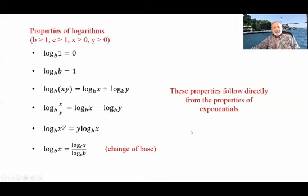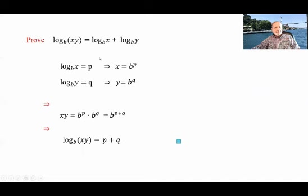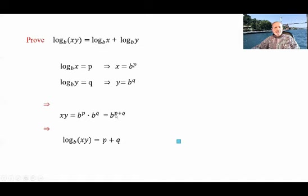These properties all follow directly from the properties of exponentials. Let's prove a couple. To prove log b of xy equals log b of x plus log b of y: let P equal log b of x, meaning x equals b to the power P. Let Q equal log b of y, meaning y equals b to the power Q — straightforward from the definition. Multiplying these two gives xy equals b to the power P times b to the power Q, which by the property of exponentials is b to the power P+Q. Then by the definition of the logarithm, log b of xy equals P plus Q.